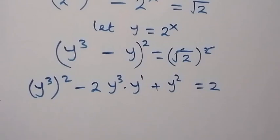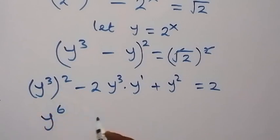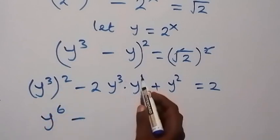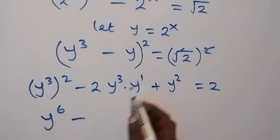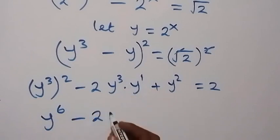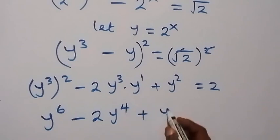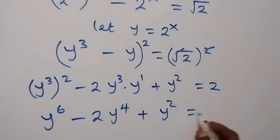This becomes y raised to power 6 — multiplying 3 by 2 — then minus, here we sum this together because we have same base, that's 2y raised to power 4, then plus y squared, then equals to 2.